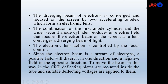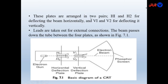Since the electron beam is a stream of electrons, a positive field will divert it in one direction and a negative field will divert it in the opposite direction. To move the beam in this way in the CRT, deflecting plates are mounted inside the tube — horizontal and vertical deflecting plates. Suitable deflecting voltages are applied to them for producing the signal. These plates are arranged in two pairs: H1 and H2 (horizontal deflection plates) and V1 and V2 (vertical deflection plates). Some leads are taken out for external connections. The beam passes down the tube between these four plates.